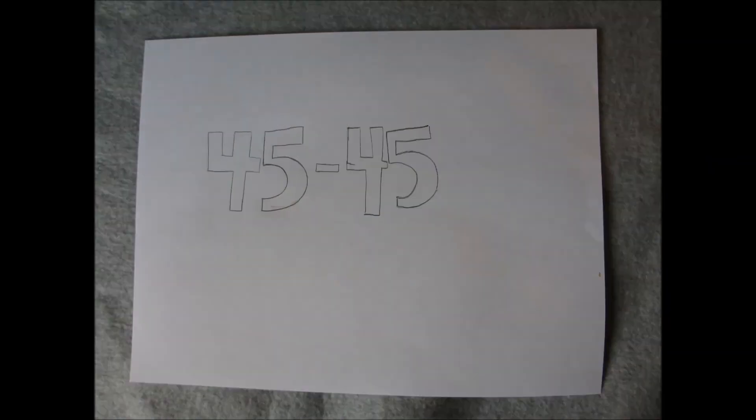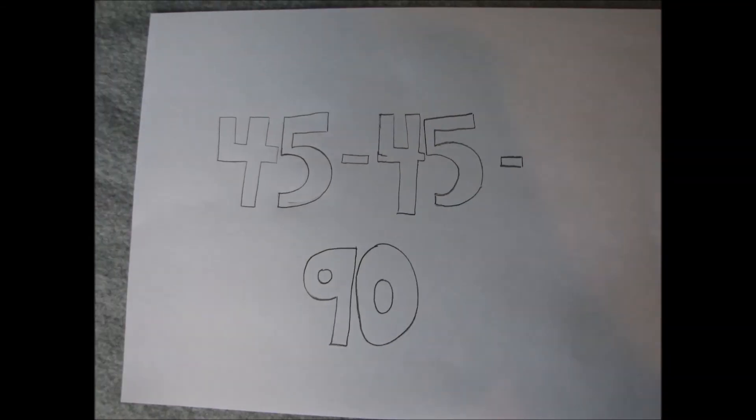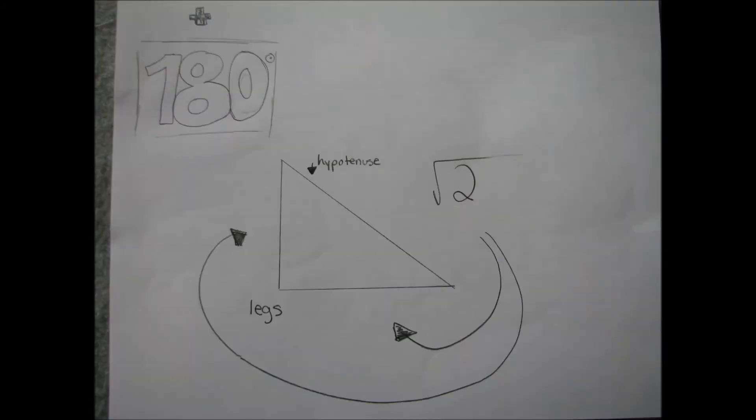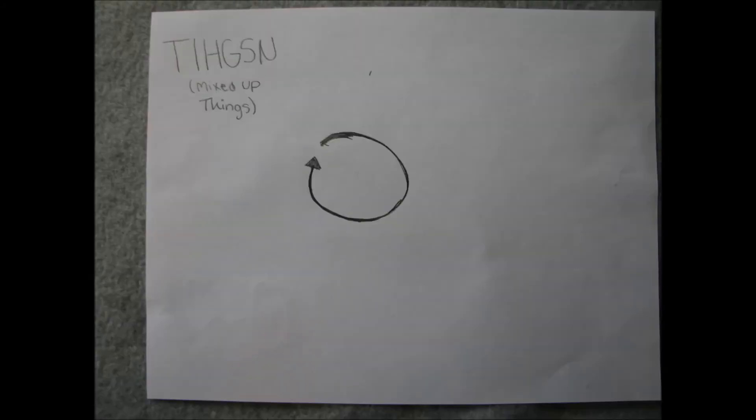45, 45, 90, adding up all to 180. The long hypotenuse, square root two from the legs below. Let's mix things up now, reverse it all.